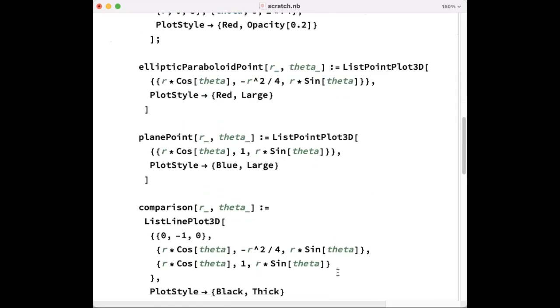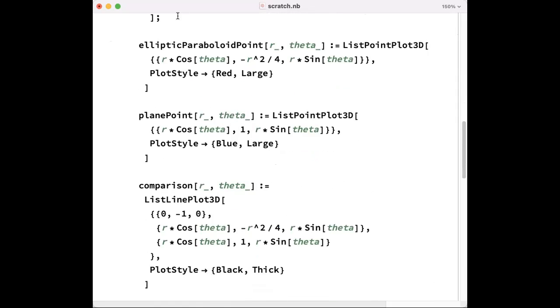Then to do some fancier work right here, let's put a single point on that elliptic paraboloid. Depending on the choice of R and theta, let's put a point at (R cos theta, R sine theta, -R squared divided by 4). This is different from the paraboloid I drew because I'm only drawing a single point. I'm not giving you a range of R and theta. I will have to supply a single R and a single theta.